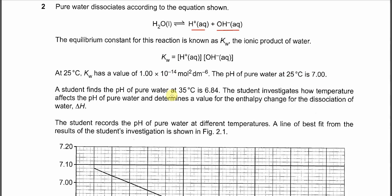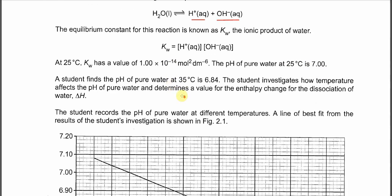A student finds the pH of pure water at 35 degrees C is 6.84. When temperature increases, we know the pH is lower. This does not mean that the water is now acidic — it just means that at higher temperature the water ionizes more and forms more H⁺. When H⁺ is more, the pH is lower because pH equals negative log of the concentration of hydrogen ion.